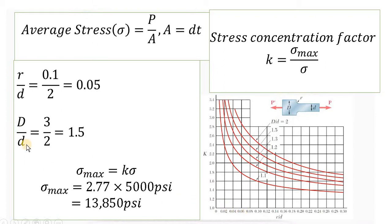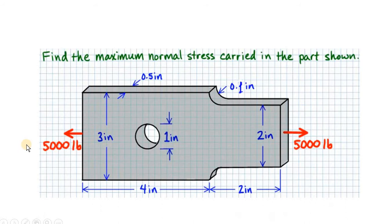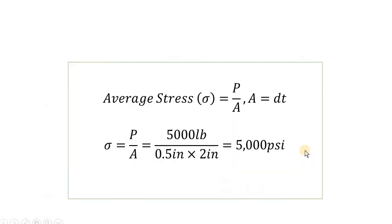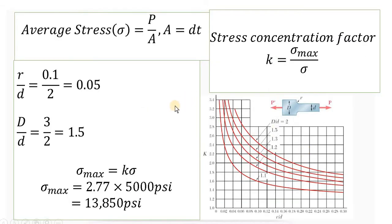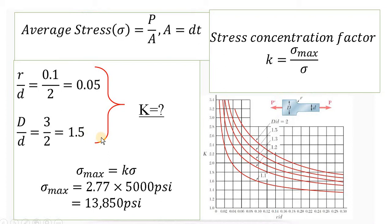Now capital D over small d: D is 3 inches and small d is 2 inches, so 3 over 2 gives us 1.5. So the curve line is 1.5. From these two values we find K from the graph. We draw a straight line between 0.4 and 0.6 on the R/d axis.